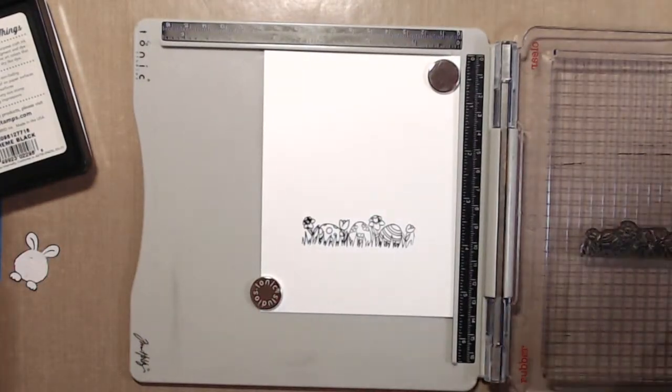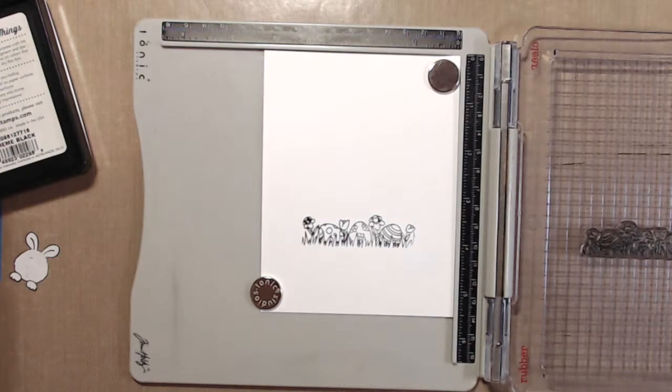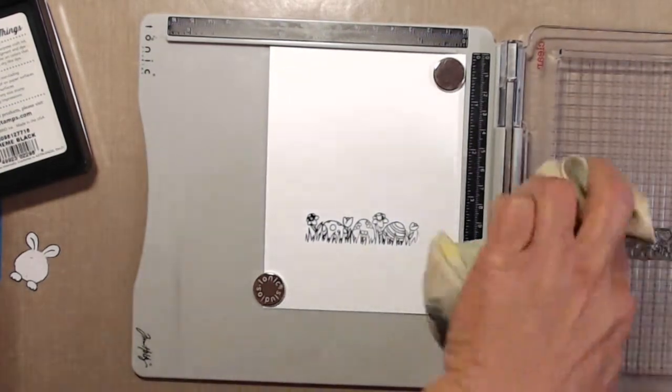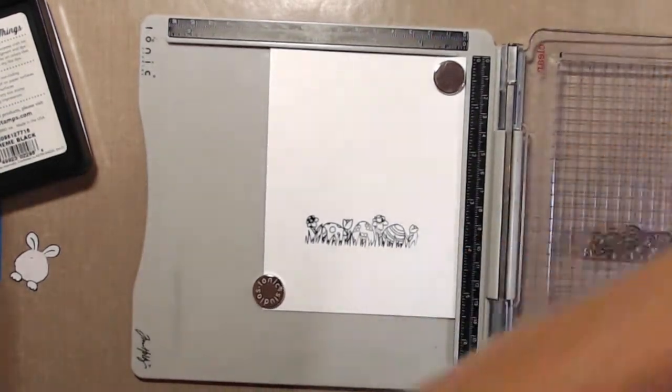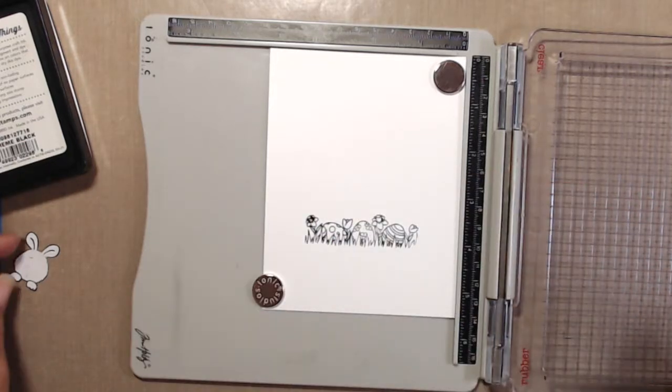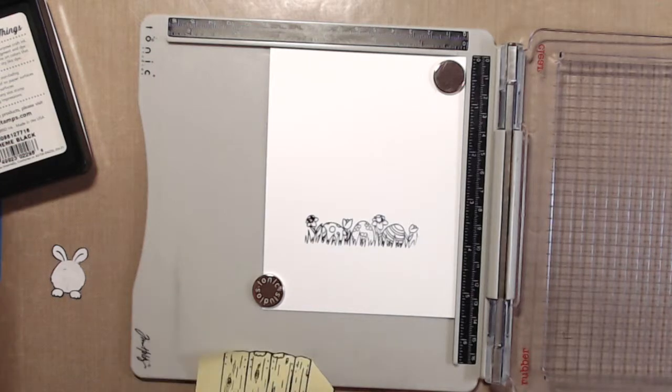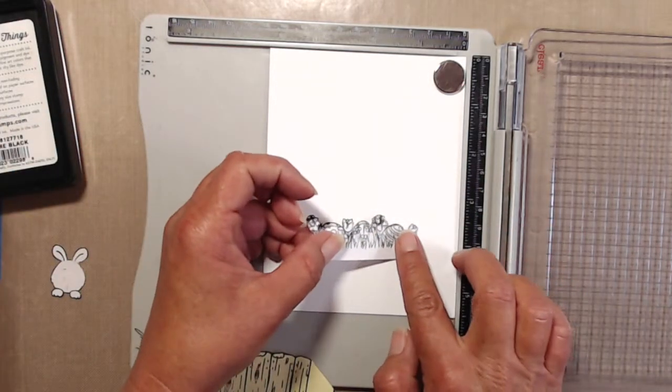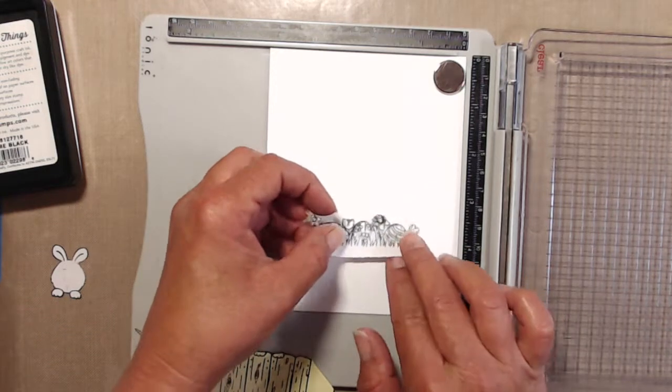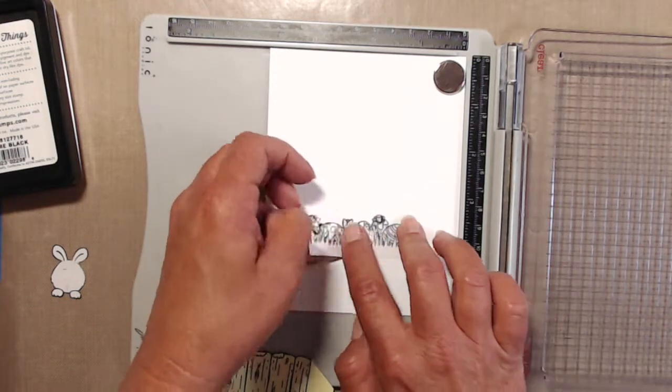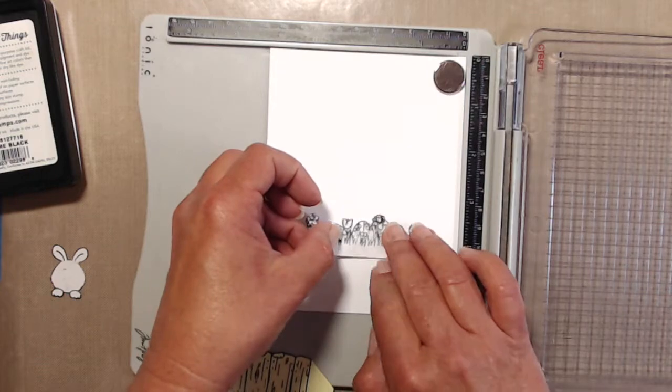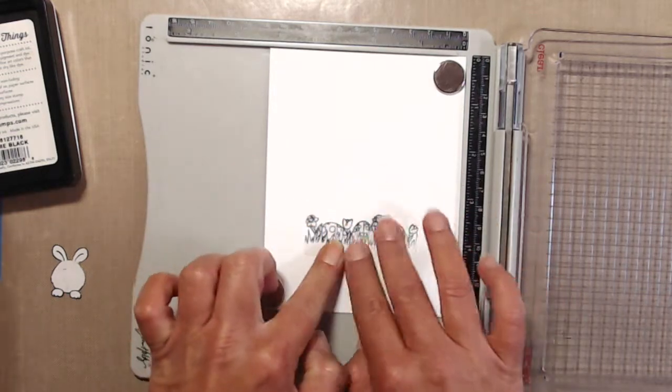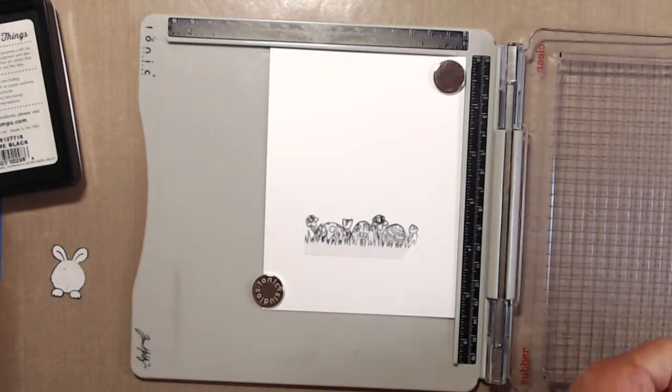To start out, I placed a piece of 80-pound Neenah Solar White cardstock into my stamp platform and stamped the row of Easter eggs on the bottom using My Favorite Things Extreme Black hybrid ink. I did create a mask for that because I want the eggs to be in front of the fence. Whatever image you want to be in the foreground, that's the image you stamp first.